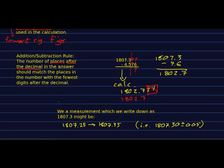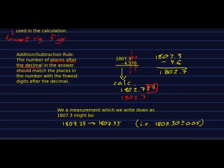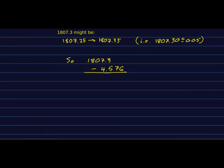So if we have a measurement and we've written it down as 1807.3, what it might be is a measurement where we believe the actual value lies in the range between 1807.25 and 1807.35, or what you would write down as 1807.30 plus or minus 0.05. So if that's how we interpret that number, then this subtraction, if we also interpret the other number the same way, you can think of it as having a lower limit.